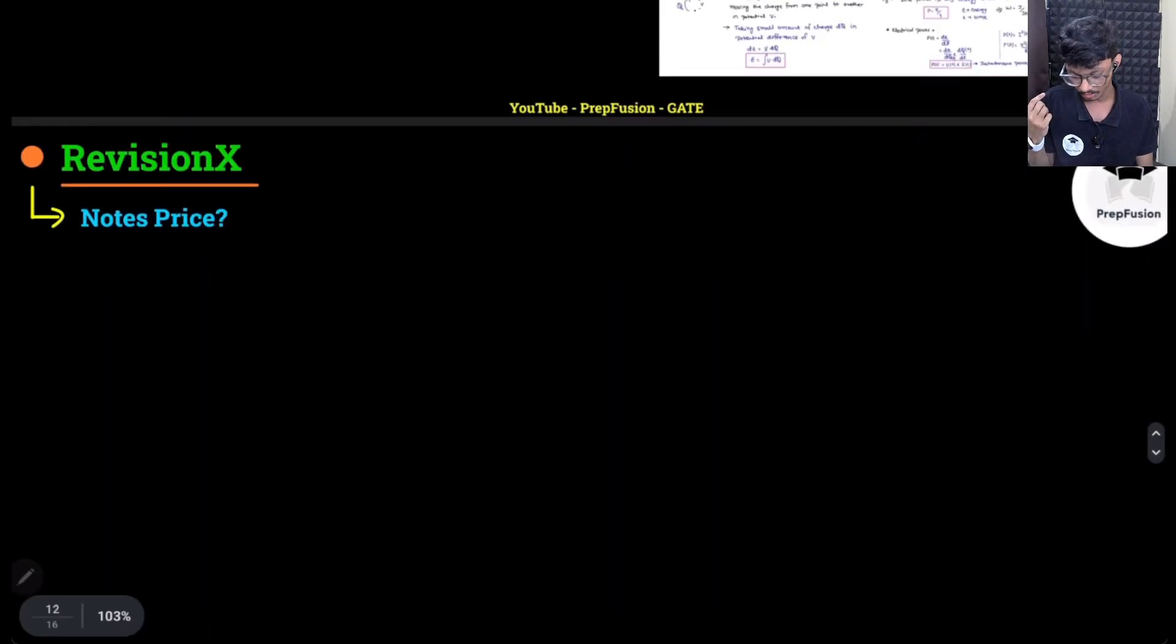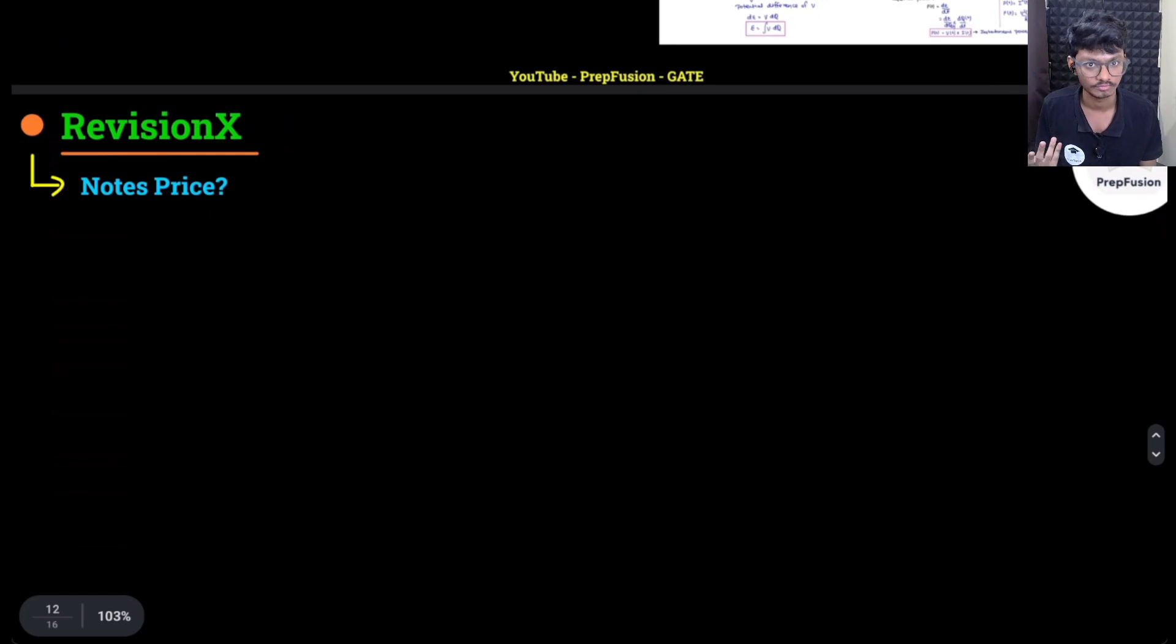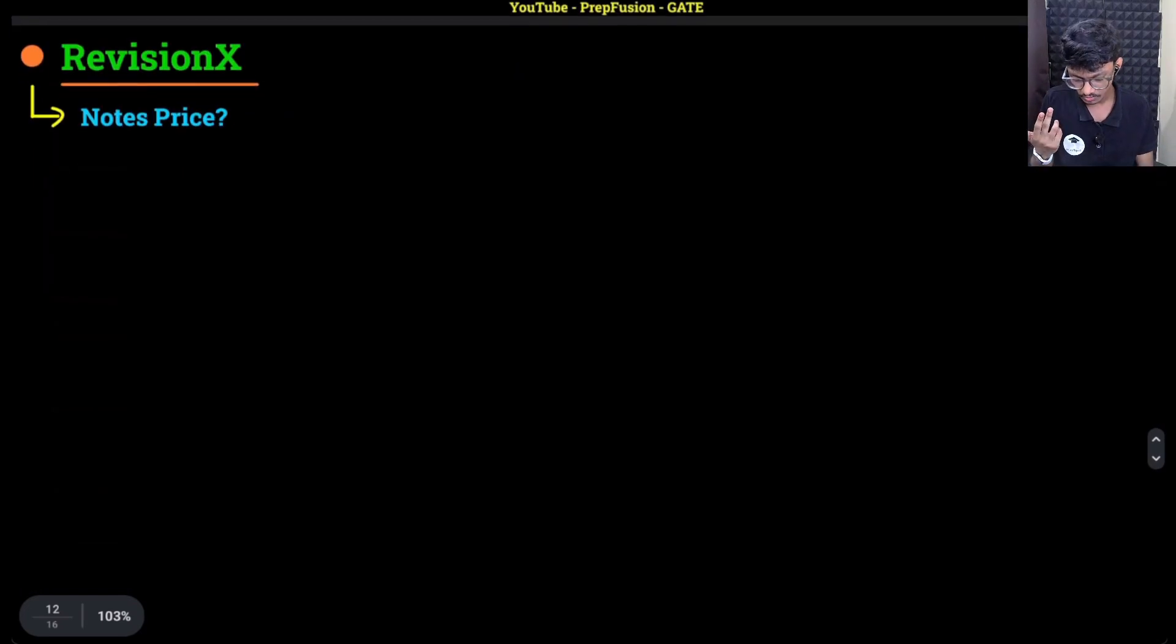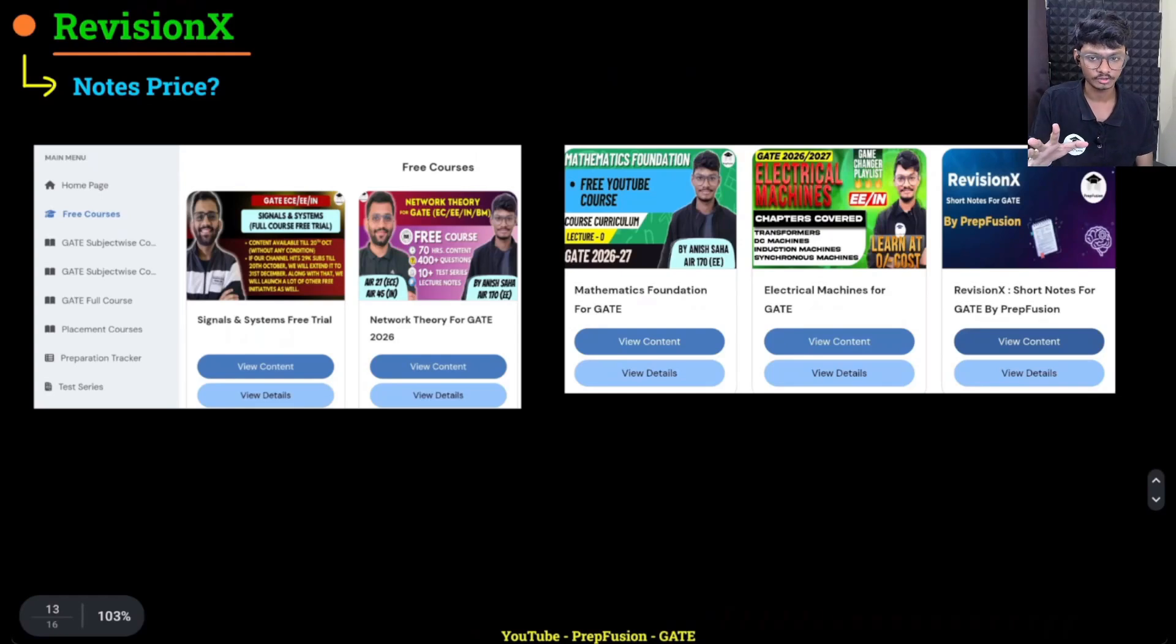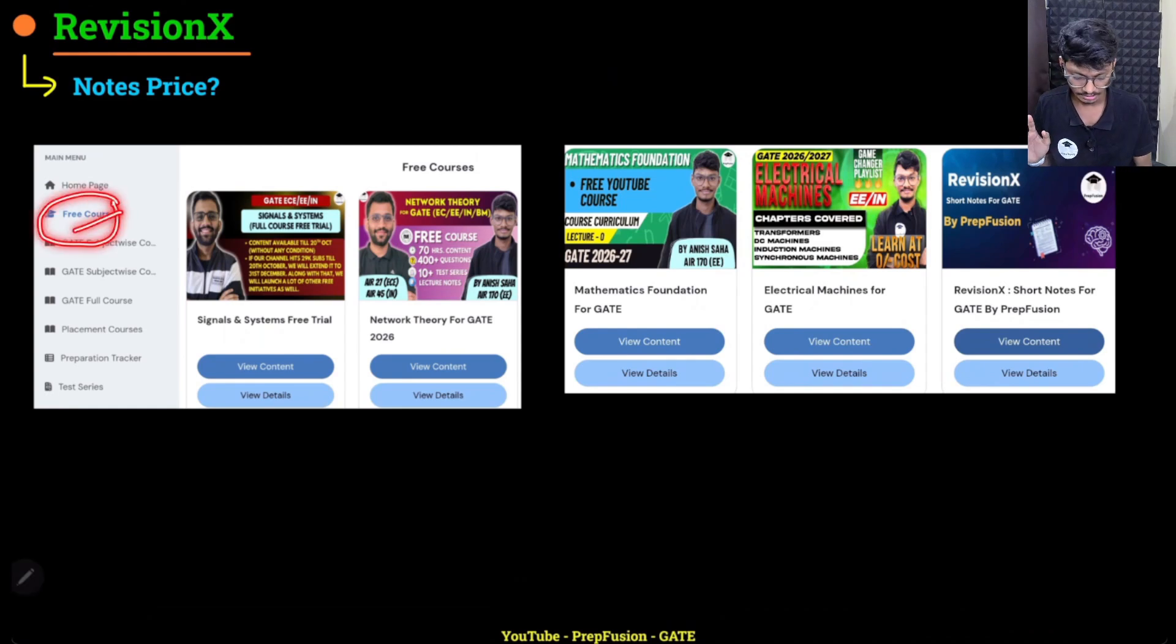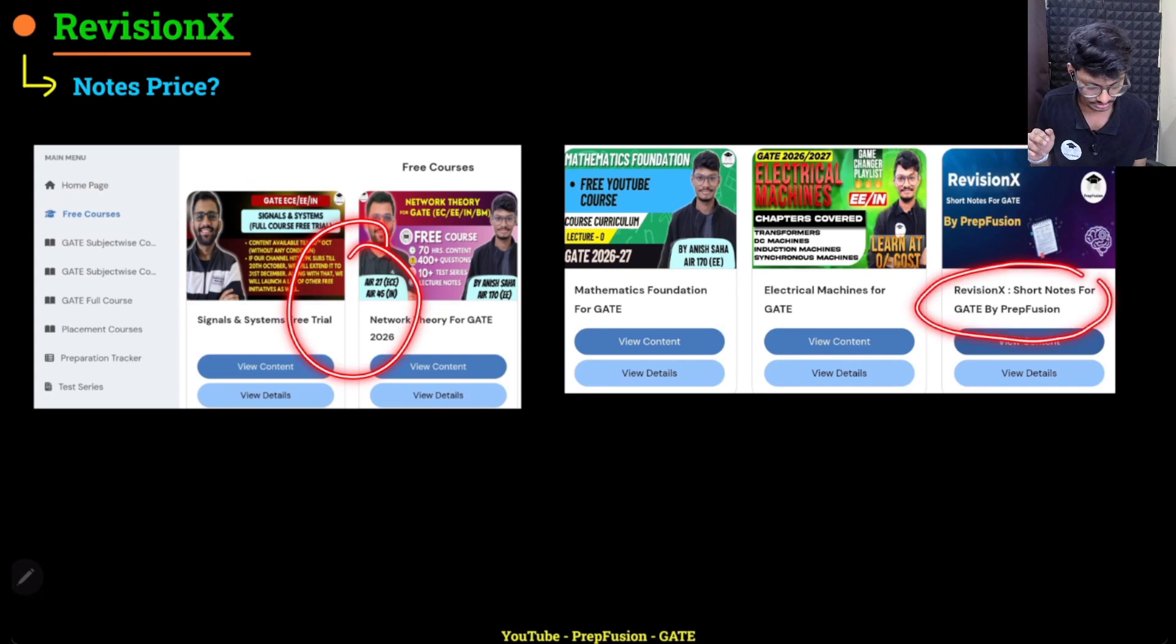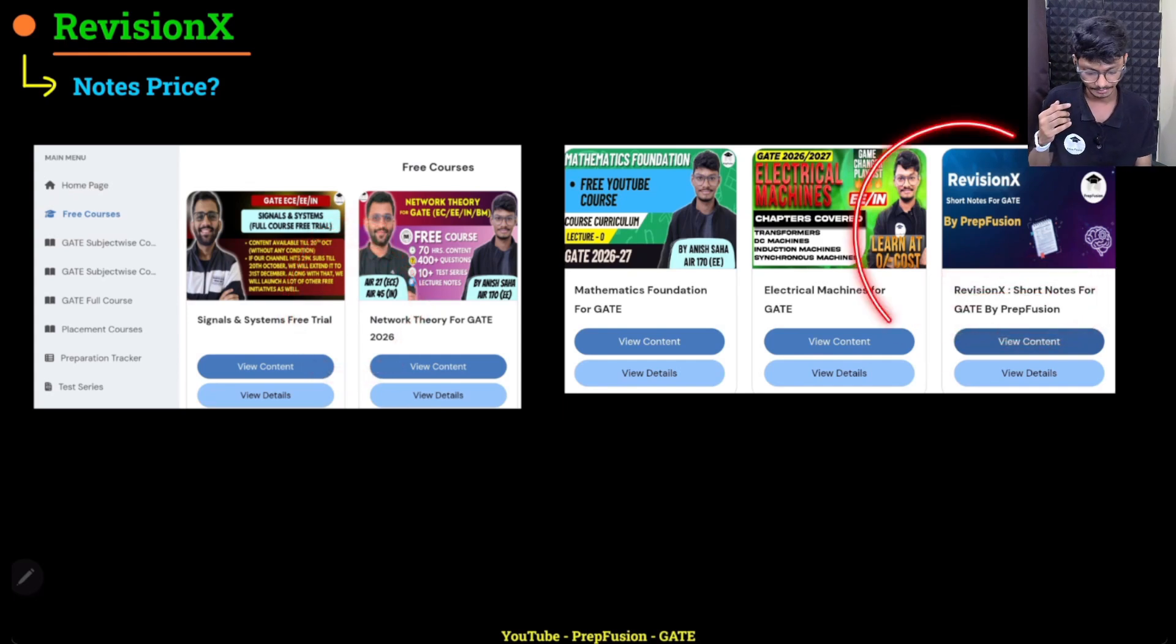And what about the price? Is there a price involved to this? As you know us, for you guys there is no price at all. For GATE 2026 aspirants there is no price. You just go into the free courses tab. If you scroll down in the free courses, you will see at the end there will be a tab that is RevisionX Short Notes by PrepFusion. It is completely free. And don't worry, you can download it, you can share it, whatever you want to do.